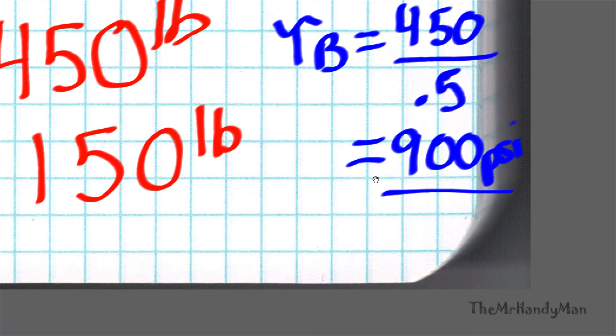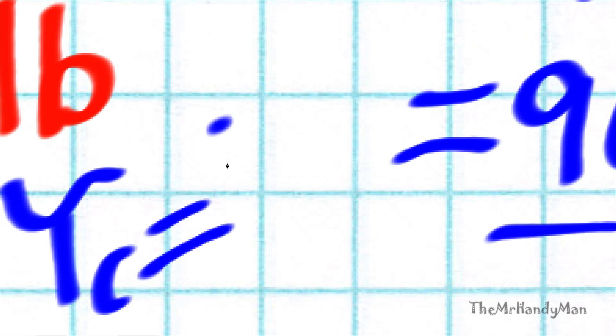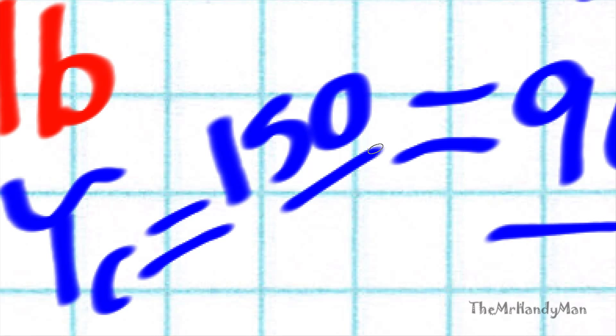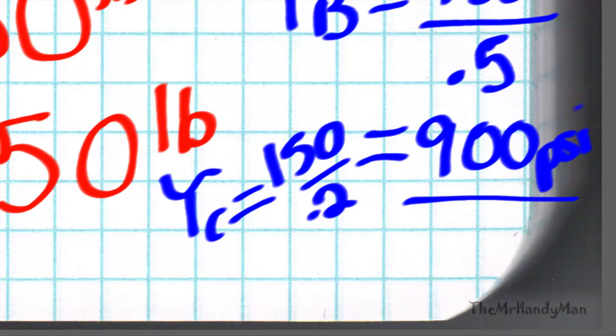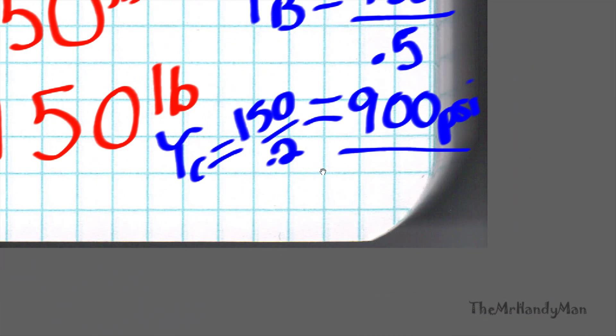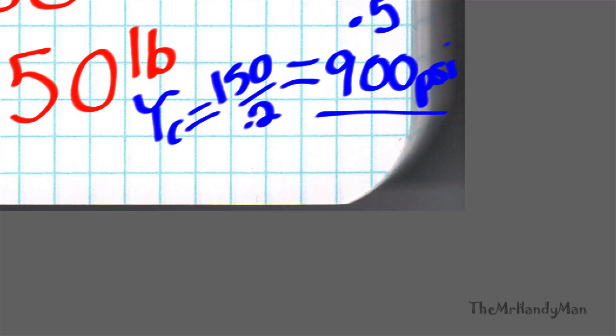And running out of room here. Shear stress at C is going to be 150 divided by 0.2. Let me zoom in so this is cleaner. That will equal 750 psi.